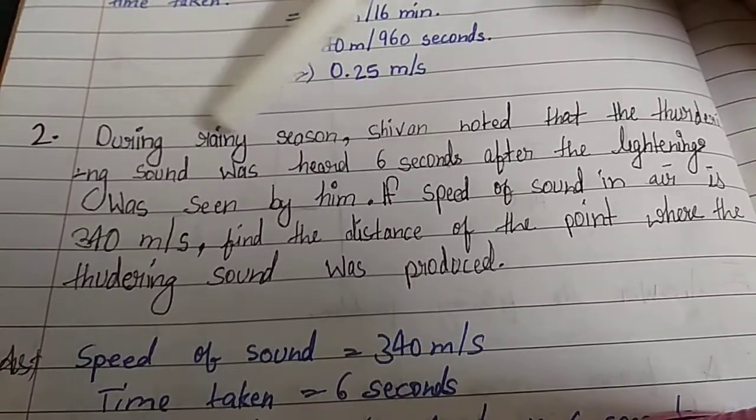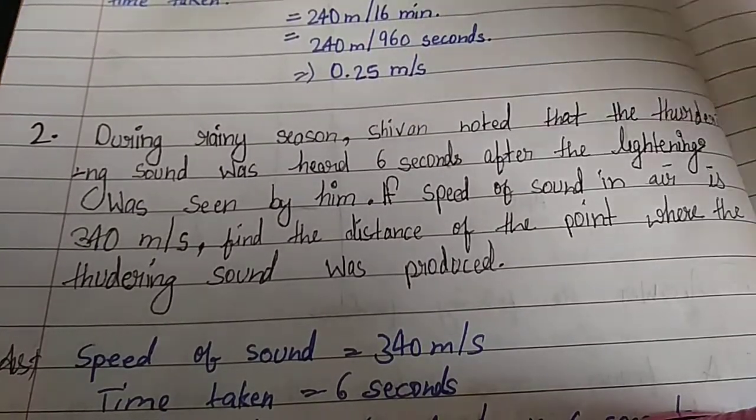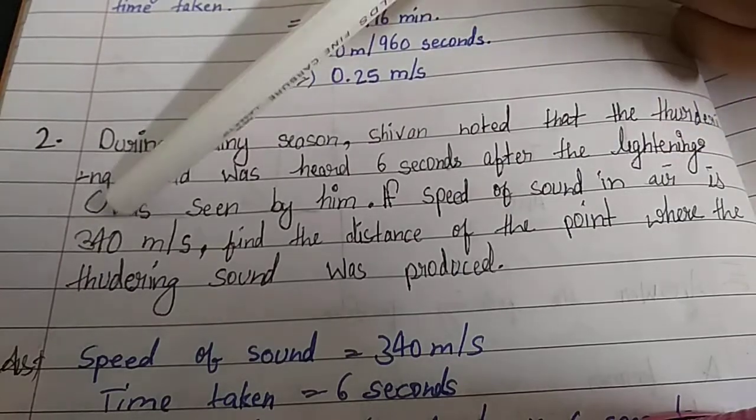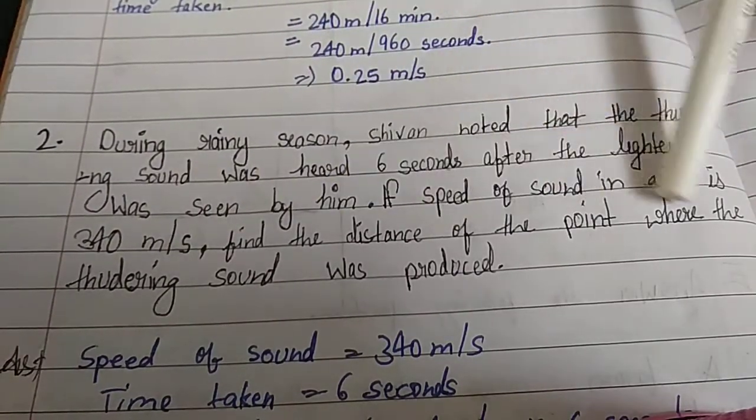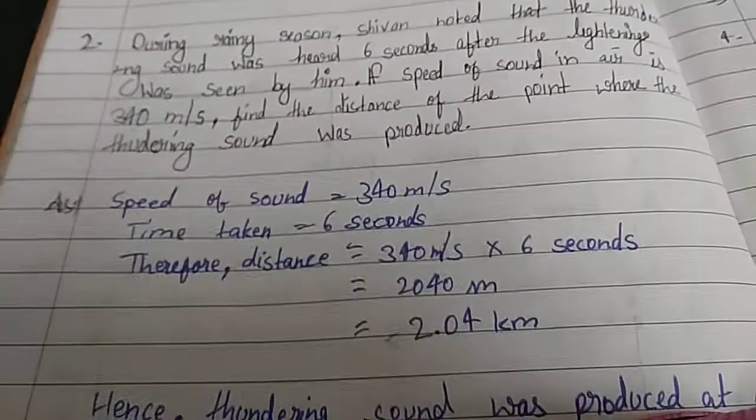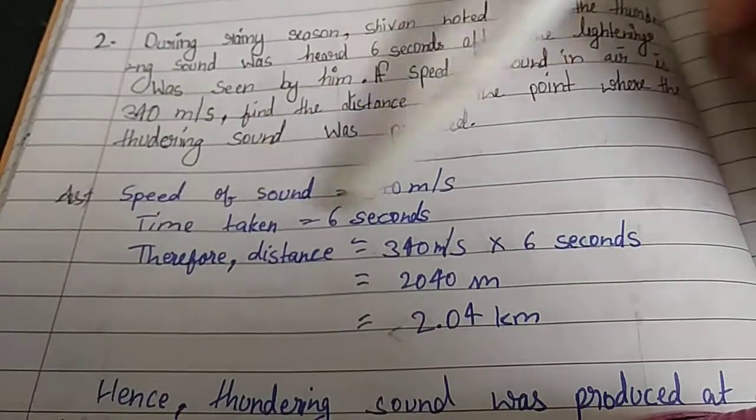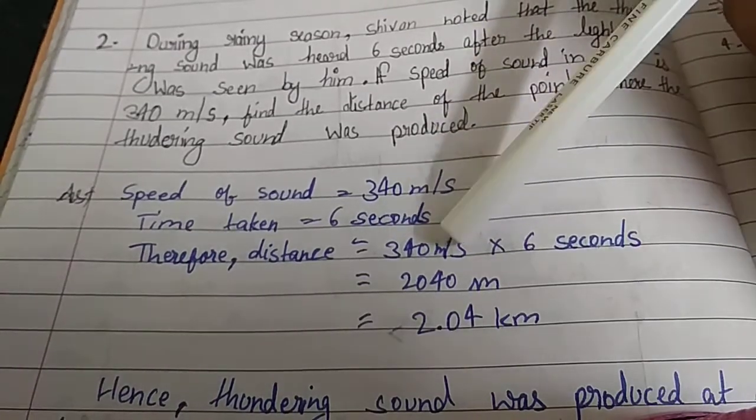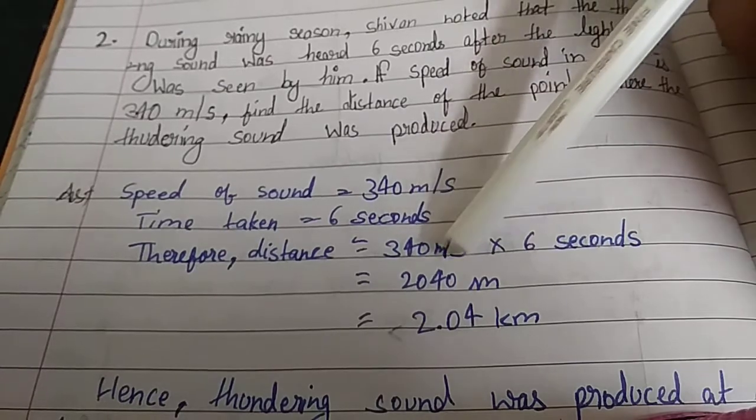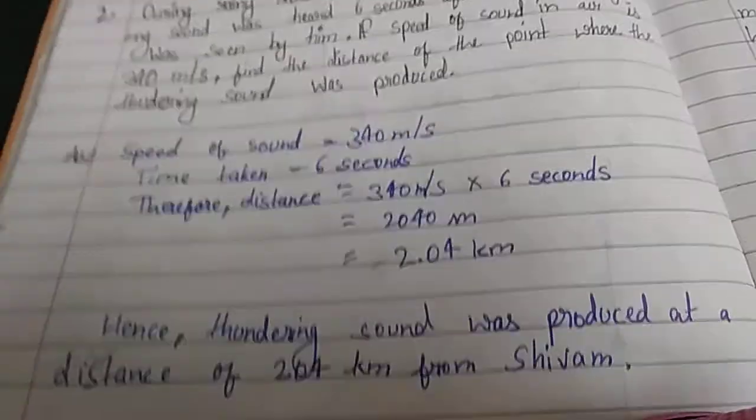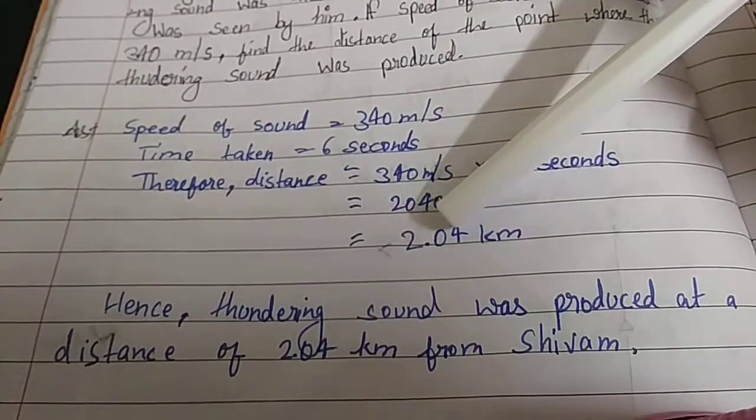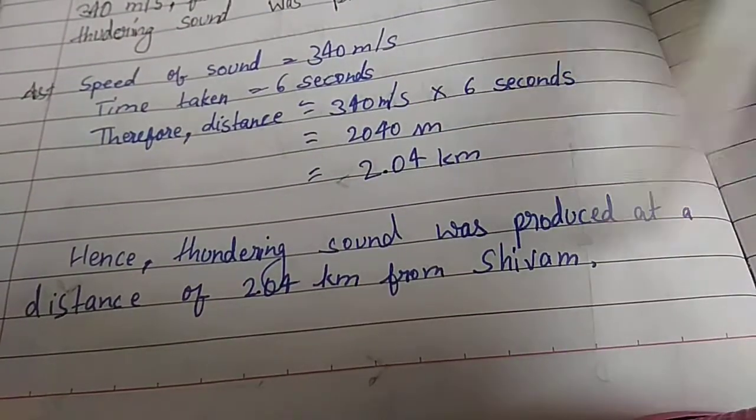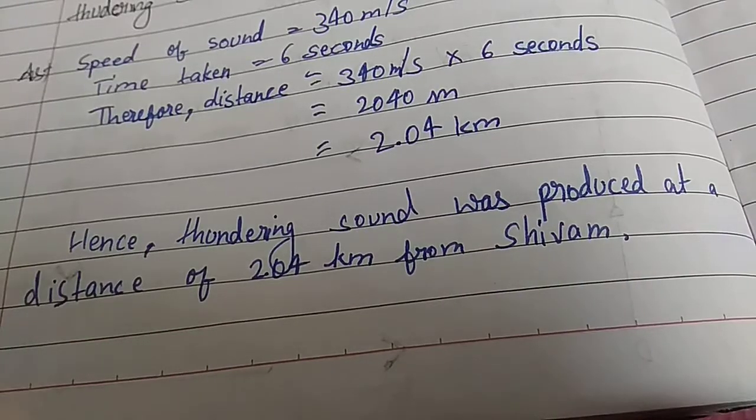Ninth question: During rainy season, he noticed that the thunder sound was heard 6 seconds after the lightning was seen by him. If speed of sound in air is 340 meters per second, find the distance of the point where the thundering sound was produced. Answer: Speed of sound is 340 meters per second, time taken 6 seconds. Therefore, distance equals time multiplied by speed: 340 times 6 equals 2040 meters, or 2.04 kilometers. Hence, the thunder sound was produced at a distance of 2.04 kilometers from Silvan.